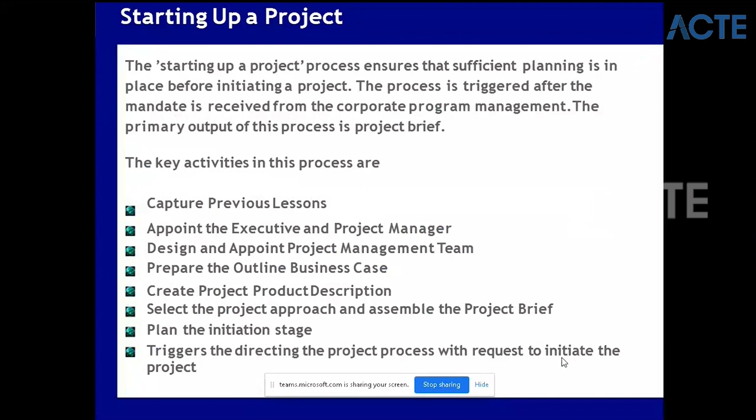Starting Up a Project ensures that sufficient planning is in place before initiating a project. The process is triggered after the mandate is received from corporate or program management. The key activities in this process are: capture previous lessons learned, appoint the executive and project manager, design and appoint the project management team, prepare the outline business case, create the project product description, select the project approach, and assemble the project brief. Then plan the initiation stage and trigger the direction of the project with a request to initiate.